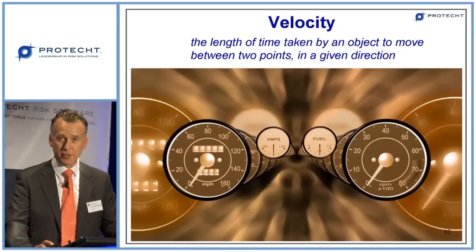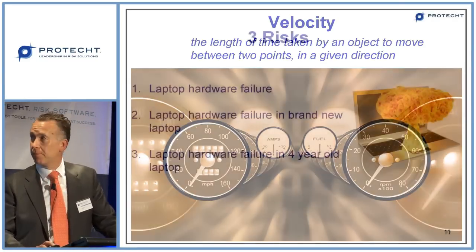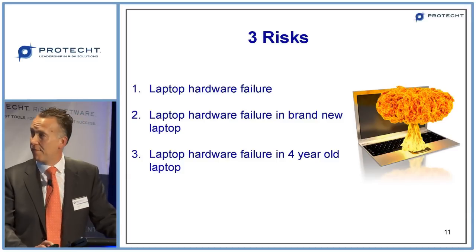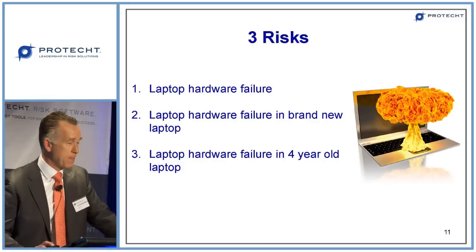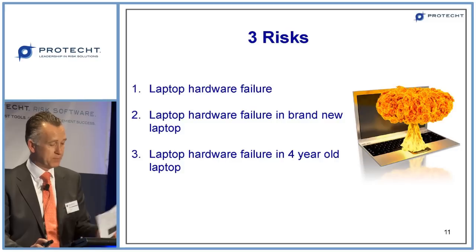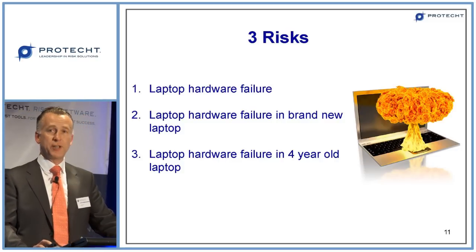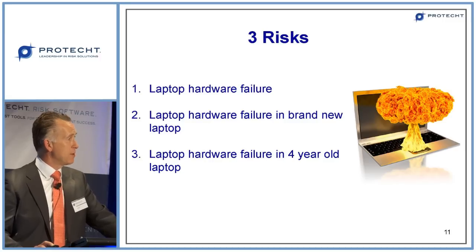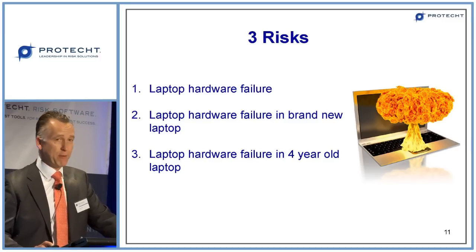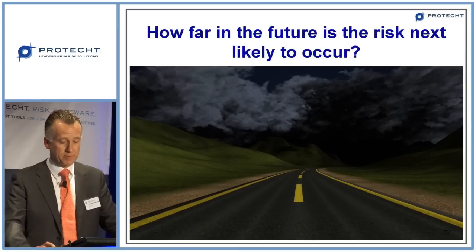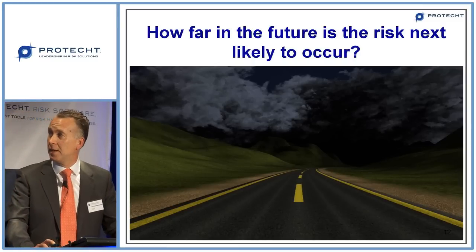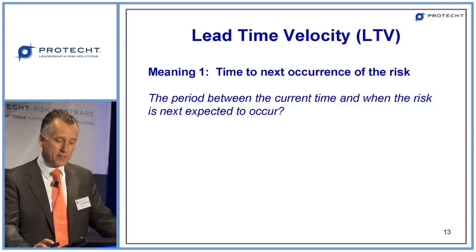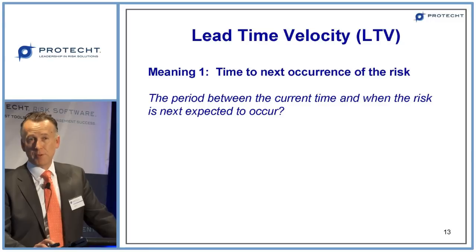We've defined velocity in two ways. To illustrate: take three risks. The first is laptop hardware failure generally. The second is laptop hardware failure in a brand new laptop. The third is laptop hardware failure in a four-year-old laptop. The time period between now and when that failure is likely to occur would be different for all three. The question is: how far in the future is the risk next likely to occur? We've coined the phrase lead time velocity, LTV — meaning the time to the next occurrence of the risk.